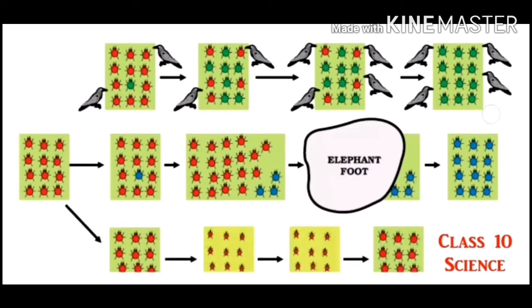But an elephant crushes the bushes where these beetles lived and most beetles are killed. By chance, a few beetles that survive are blue. In small populations, any accident or chance event can change gene frequency.